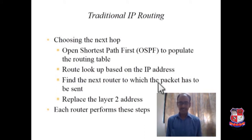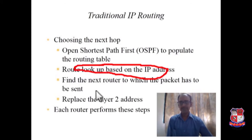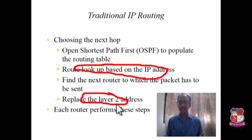For traditional IP routing, OSPF is a well-known open shortest path protocol used to populate the routing table. The biggest problem is that the routing table becomes very large, so route lookup based on IP address takes more time. Then the router finds the next router to which the packet has to be sent and replaces the layer 2 address. This normally happens when the end router is reached and it needs to deliver the IP datagram inside a local area network, requiring a layer 2 or MAC address. Every router takes a certain considerable amount of time, and when you think about crossing 10 hops, that is one router time multiplied by 10.